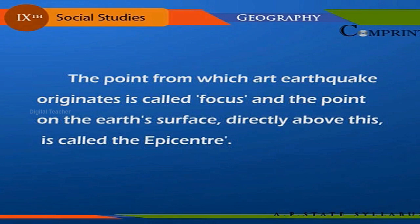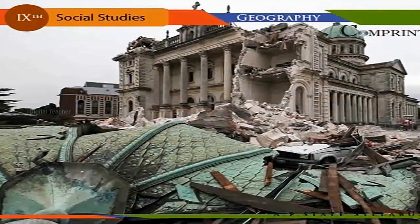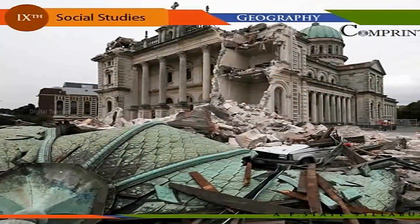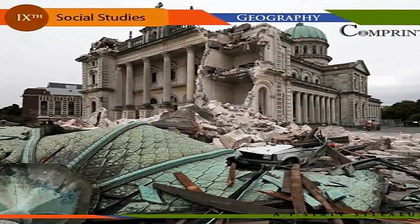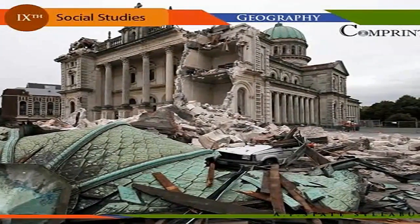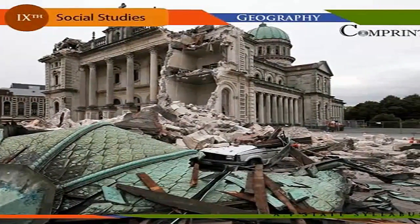The point from which an earthquake originates is called the focus, and the point on the Earth's surface directly above this is called the epicenter. Three types of seismic waves are identified which spread outwards in all directions from the focus: the P, S, and L waves. The compressional waves travel 1.7 times faster than the shear waves.